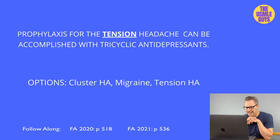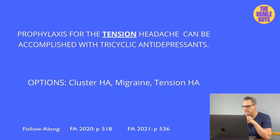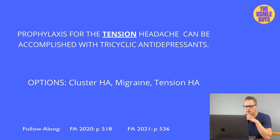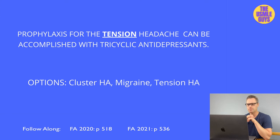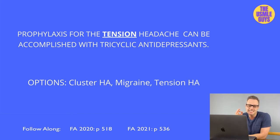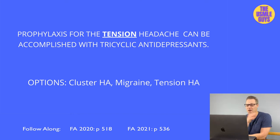For tension headache prophylaxis when episodes are too frequent, we can use tricyclic antidepressants (TCAs). Examples include amitriptyline, amoxapine, desipramine, and doxepin. Don't forget that TCAs are highly anti-muscarinic and therefore pose some very unwanted side effects — that's why we don't want to use them if we don't have to.